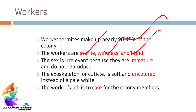In the case of honey bees, workers are also sterile, but they have been developed from fertile eggs. The sex is irrelevant because workers are immature and they do not reproduce. The exoskeleton or cuticle is soft and uncolored, appearing pale white. The worker's job is to take care of the family members.